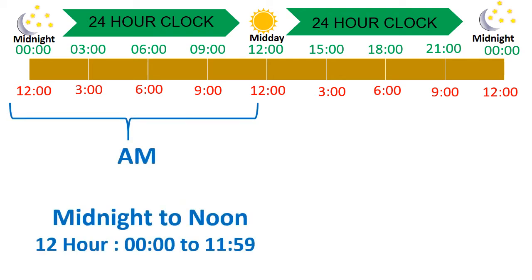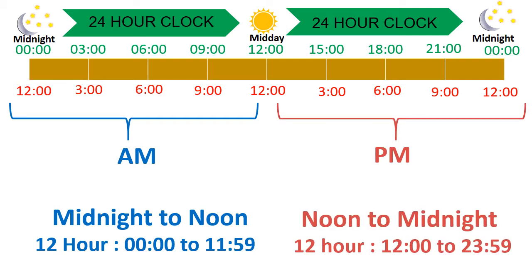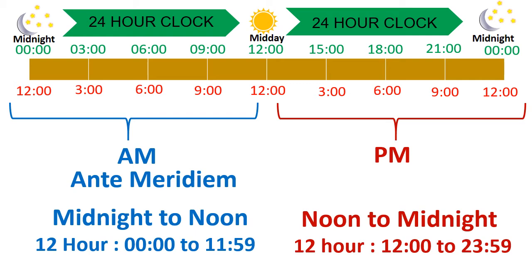AM covers the 12 hours running from midnight to noon, and PM covers the other 12 hours running from noon to midnight. AM is called ante meridiem and PM is called post meridiem. This is a graph of the 24-hour clock and AM/PM, or the 12-hour clock.